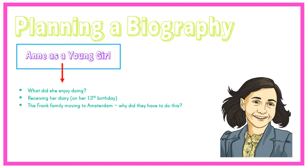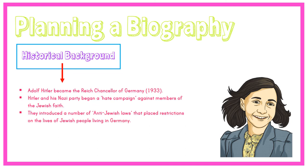Now can we research Anne as a young girl. You're going to go through each of these steps one by one, recording your information as notes. This is your historical background — giving a little bit of information about what Adolf Hitler did and what he believed in, and how he managed his party, which is called the Nazi Party. This was very important because this party introduced a number of anti-Jewish laws that placed restrictions on the lives of Jewish people living in Germany.